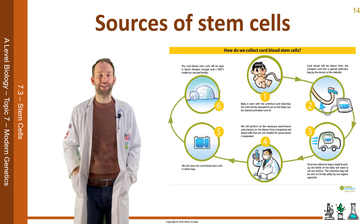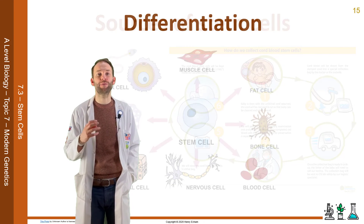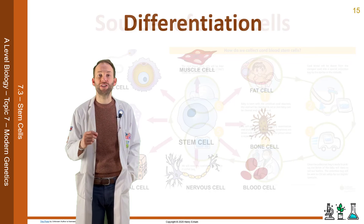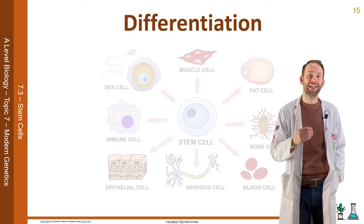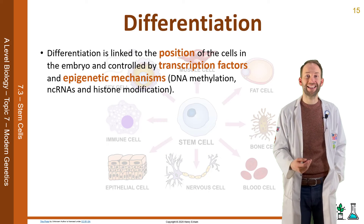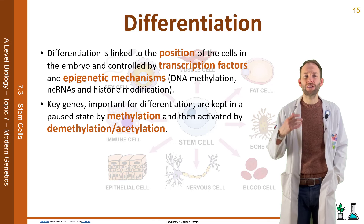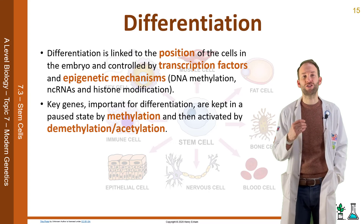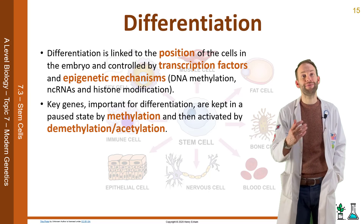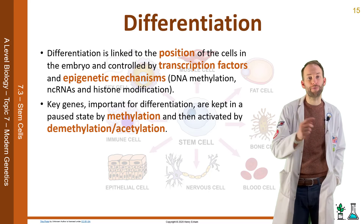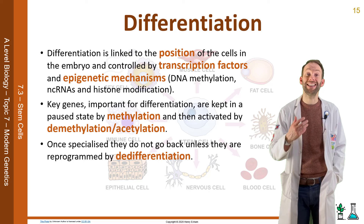Despite containing the whole genome, only days after conception, cells are already predestined to become one type of tissue, linked to their position in the embryo. Differentiation is controlled by transcription factors and epigenetic mechanisms such as DNA methylation, NCRNAs, and histone modification. Therefore, some genes are switched on and some get switched off. Key genes important for differentiation are kept in a poor state by methylation, then activated by demethylation or acetylation. Once specialised, cells do not go back as they lose the ability to express certain genes, unless they get reprogrammed in a process called de-differentiation.